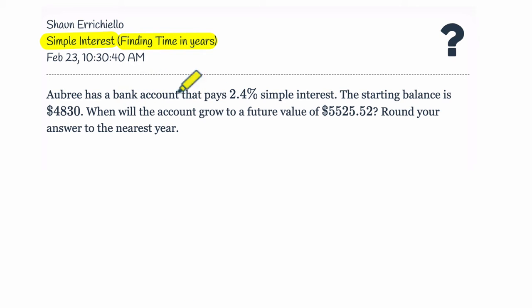Okay, so we're told that Aubrey has a bank account and it pays 2.4% simple interest. Let's just label that right away. This is our R value, our interest rate. And it's 2.4%, so that's 2.4 out of 100, which equals 0.024 because you want to evaluate our rate as a decimal. The starting balance is $4,830. When will the account grow to a future value of $5,525.52?